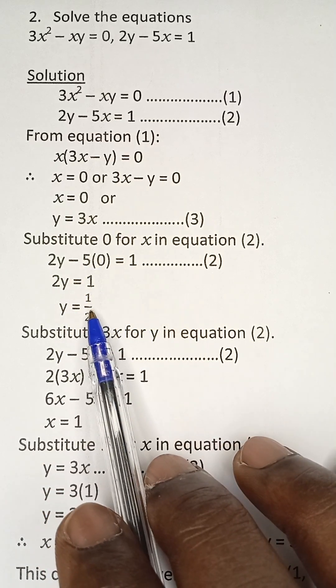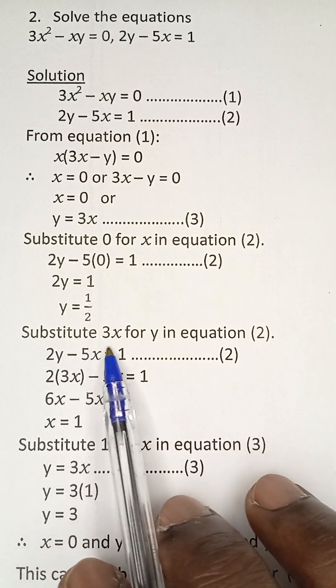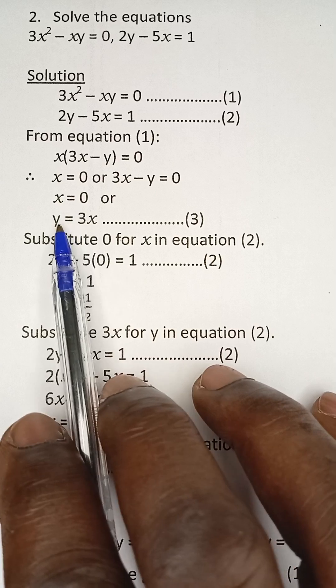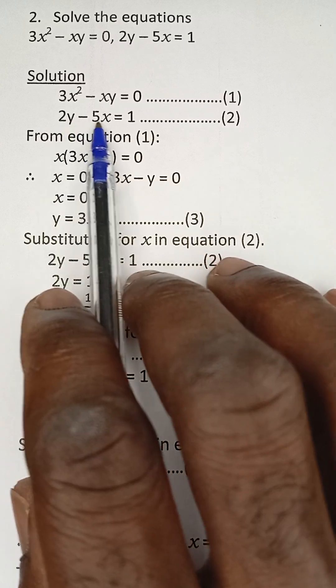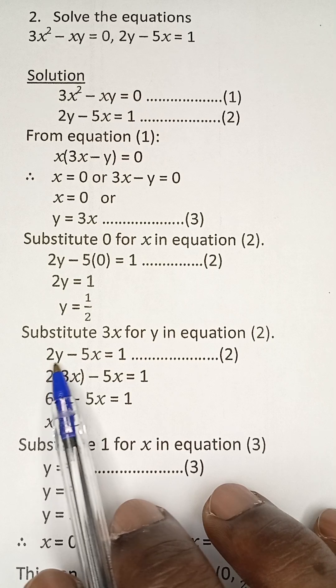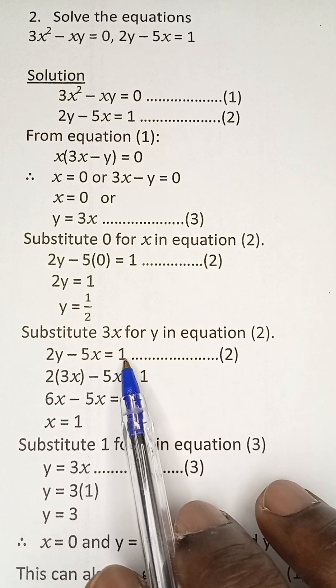Now, substitute 3x for y in equation 2. You can see what we got as y. Y = 3x. So we can go to equation 2. Anywhere we see y, we are going to put 3x. So we have 2y - 5x = 1.